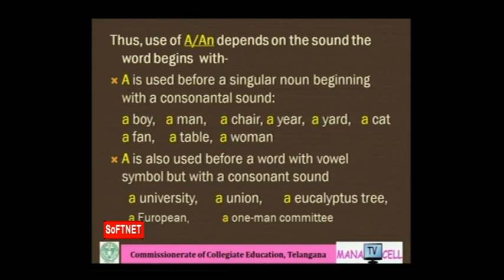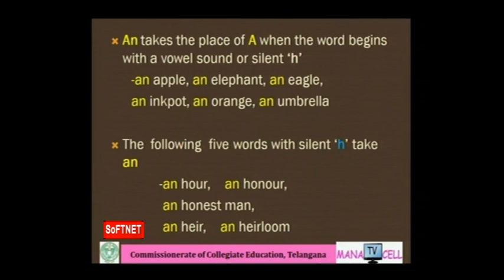'A' is also used before a word with a vowel letter but a consonant sound. For example, 'university' — the first letter is a vowel, but the sound is a consonant. So: a university, a union, a eucalyptus tree, a European, a one-man committee.